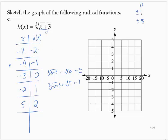So here are a few points on the curve: (−11, −2), (−4, −1), (−3, 0), (−2, 1), (5, 2). We could find other points, but this is a good start, and we draw the general shape of a cube root function from there.